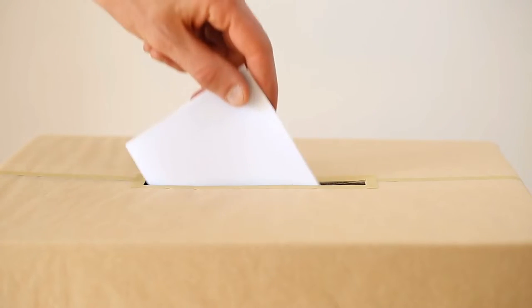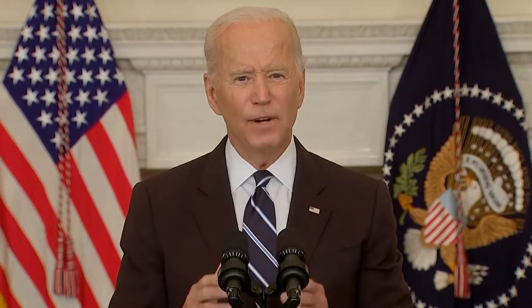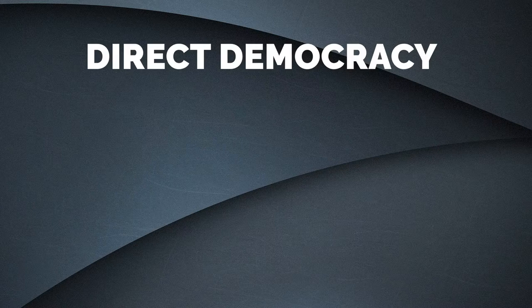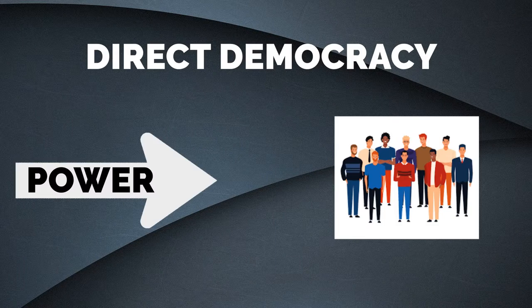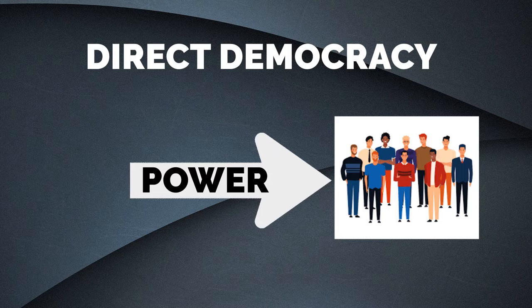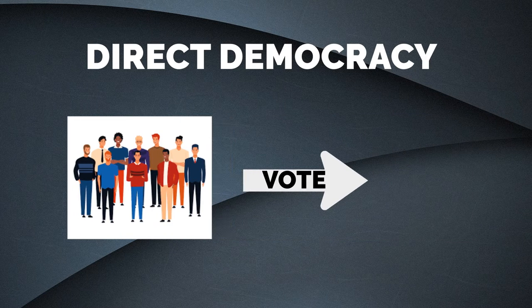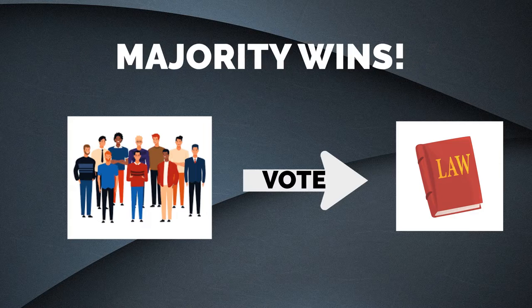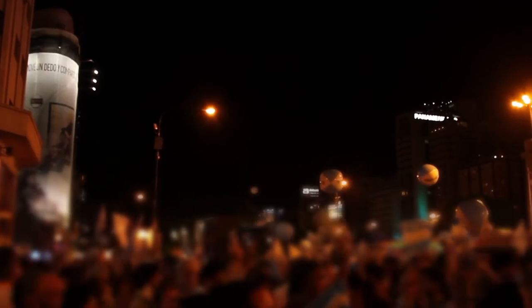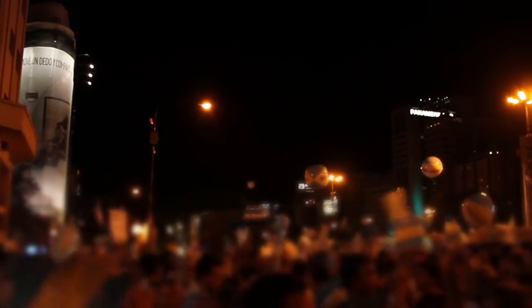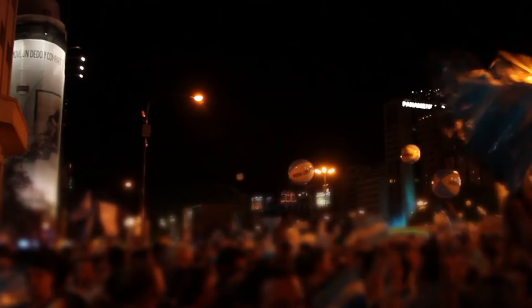Representative democracy is commonly seen in politics and most democracies today. On the other hand, direct democracy is direct power to the people — people get to vote on important bills, laws, and policies directly. Majority wins, and in theory, gives people the power to represent themselves.